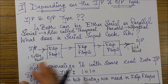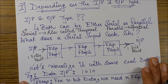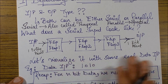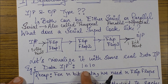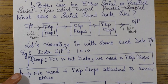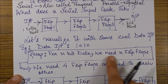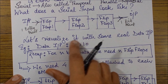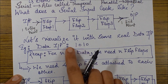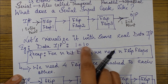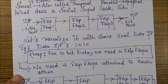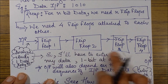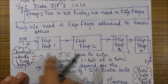Let's visualize it with some real data input. Let's take a data input of 1010. The recap: for n data bits we need n flip-flops. That means for this particular data input, which has four data bits — one, two, three, four — we'll be needing four flip-flops.